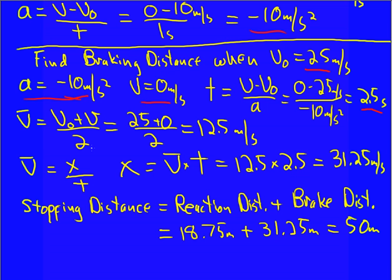I can, again, keep using the average velocity equation. It's V0 plus V over 2. So I started out at 25. I ended up at 0. And so my average is 12½. And so the distance, average velocity times the time, 12½ times 2½, 31.25 meters. And so the stopping distance is just the sum of those two, 18.75 we found above, 31.25 we found now for the braking distance, total of 50 meters.